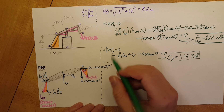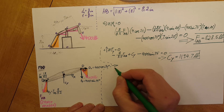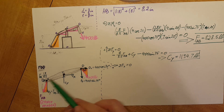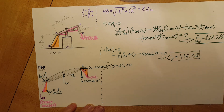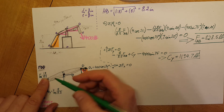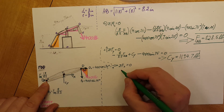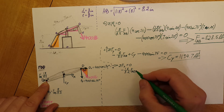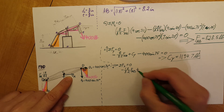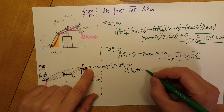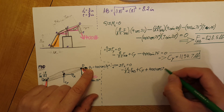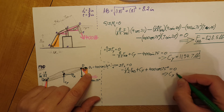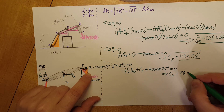Now for sum of forces in the X direction, taking rightward as positive, equal to zero. We have three forces: negative (1.8/8.2)FAB pointing left, plus CX pointing right, plus 400 cosine 75 degrees pointing right, all equal to zero. The only unknown is CX, so we calculate it: CX equals 78.3 pounds.